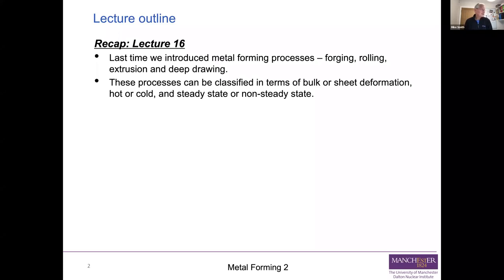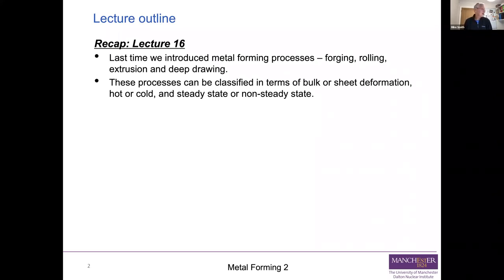Cold forming — deep drawing is an example — means the loads you apply are higher, but you end up with a better surface finish because there's no atmospheric attack on the surface. And then the more complicated classification: steady state or non-steady state. If you can watch the shape changing, like thumping something with a hammer, it's non-steady state. If you watch material going into a pair of rolls and coming out the other side, it's steady state — at any one time the thickness on the input and output sides are not changing.